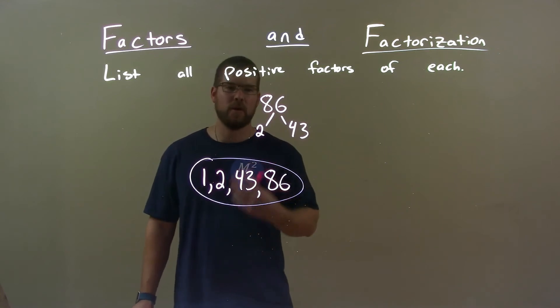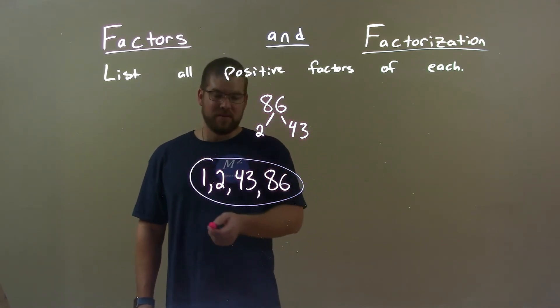One, the number itself, and our two prime numbers. So that brings us to our final answer of 1, 2, 43, and 86.